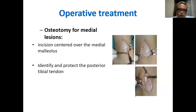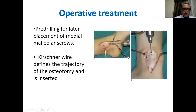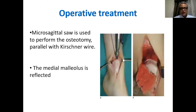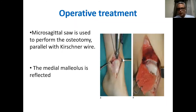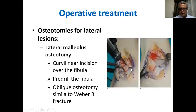For medial malleolus osteotomy, you make an incision centered over the medial malleolus, identify and protect the tibialis posterior tendon, do some pre-drilling for later fixation, and use Kirschner wires to define the trajectory of the osteotomy. Use a mini saw to begin the osteotomy but do not take it to the end — finish with an osteotome so the saw does not injure the talar articular surface. Then reflect the osteotomy and you have very good access to the anteromedial and medial part of the talar dome.